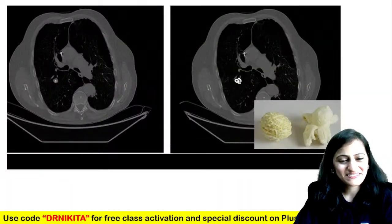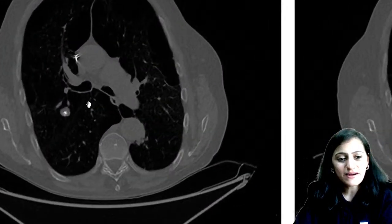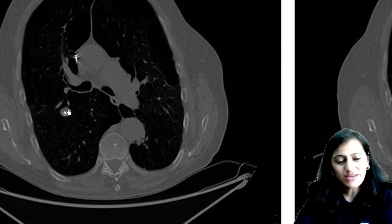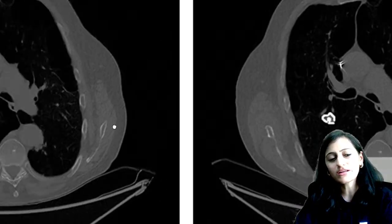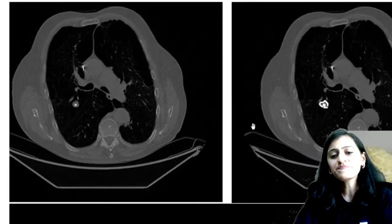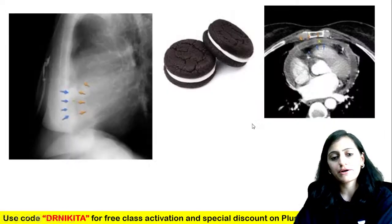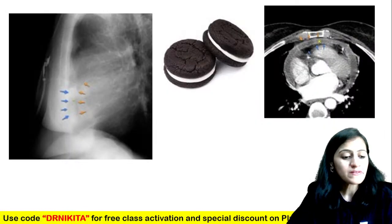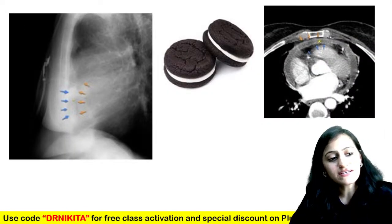Look at this CT scan showing a lesion in the lung with popcorn calcification — this is your pulmonary hamartoma.